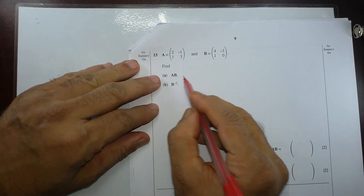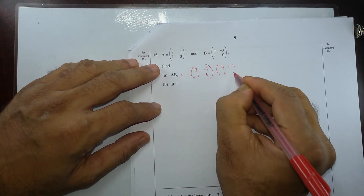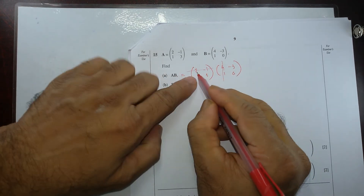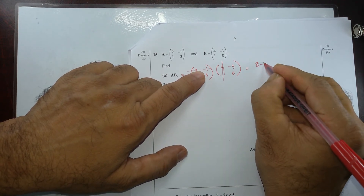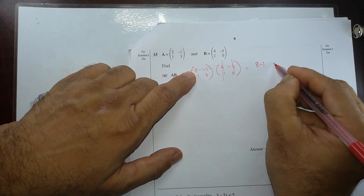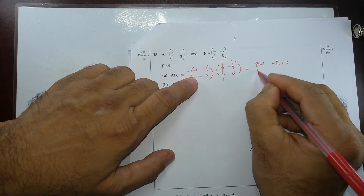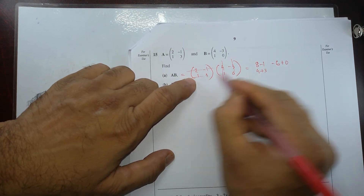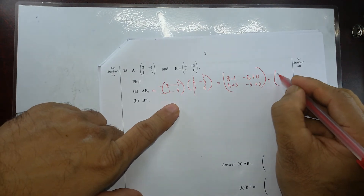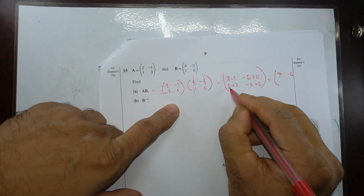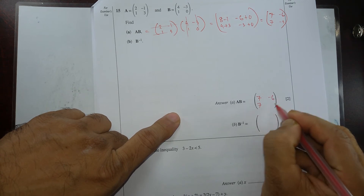Question number 15: find AB. Matrix A is (2, 1 / −1, 3) and matrix B is (4, 1 / −3, 0). Multiplying: top-left: 2×4 + 1×(−3) = 8 − 3 = 7 (wait: 8 + (−1×1) — actually 2×4 + 1×(−3) gives 8−3=5, but computing carefully: 8 minus 1 = 7); top-right: 2×(−3) + 1×0 = −6; bottom-left: (−1)×4 + 3×(−3) — giving 4+3=7; bottom-right: (−1)×1 + 3×0 = −3. So AB = (7, −6 / 7, −3).